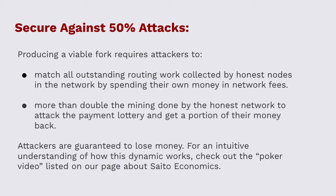What about 50% attacks? This is one of the most wonderful things about having a distributed work-gathering system. If you want to attack Saito, you first need to match all of the outstanding routing work — because if you don't spend 100% of the fees that the honest network is collecting, you by definition can't produce a faster blockchain. But once you've spent 100% of those fees and locked them up, you also need to play the mining game. The math, which we have papers on, works out so that you need to do more than double the amount of mining the honest network is doing to get any of your money back. We have guaranteed costs of attack above the 50% point, which to my knowledge no other blockchain actually has.